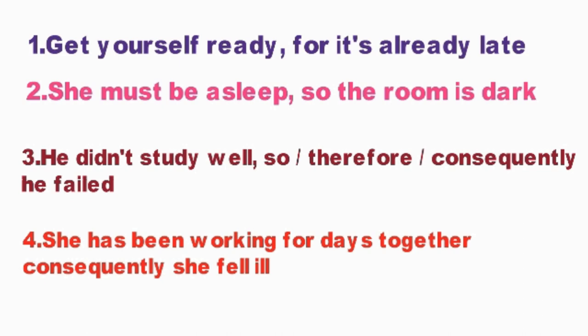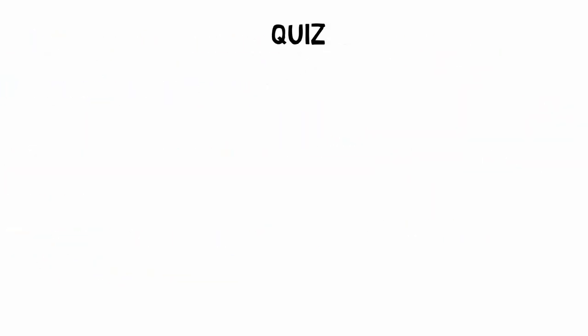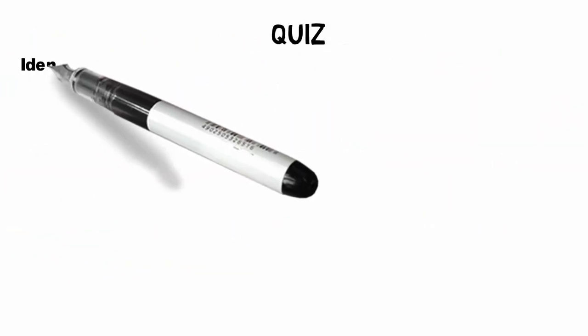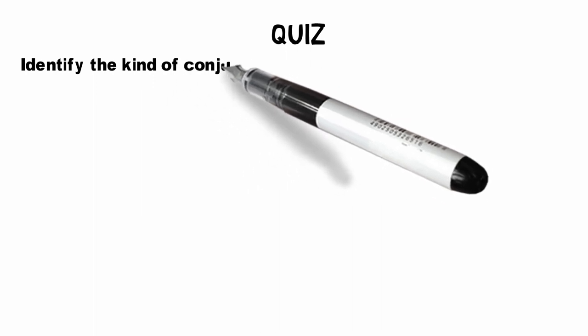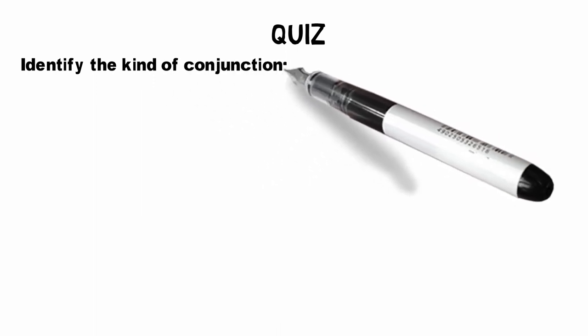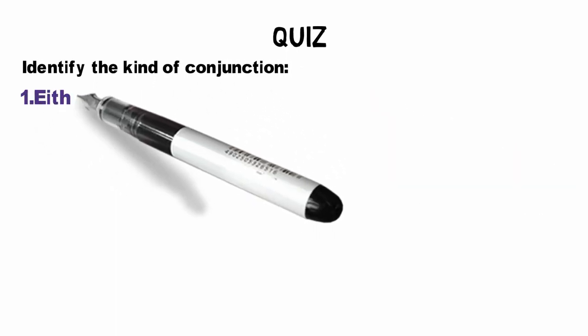So this is all about kinds of coordinating conjunctions. Please go through the lesson once again and try to participate in the quiz as well. Quiz time, friends — very simple quiz as usual. Identify the kind of conjunction — that's it.